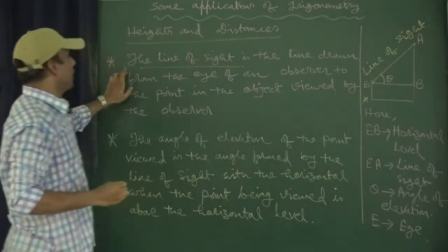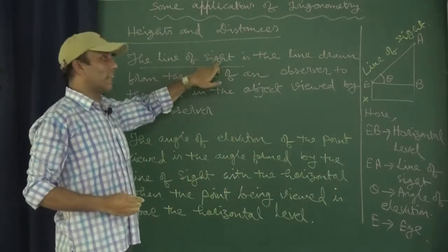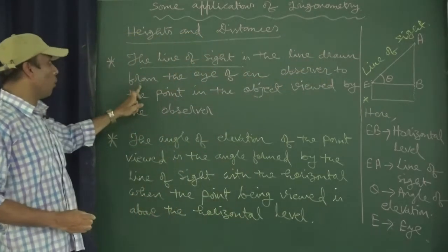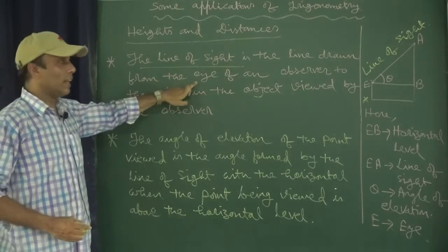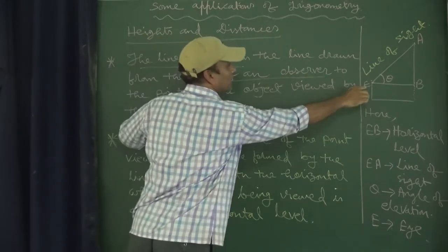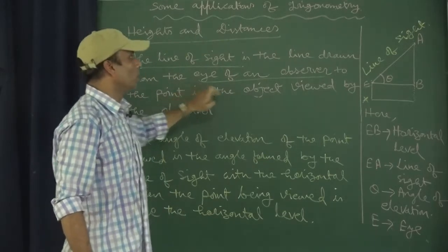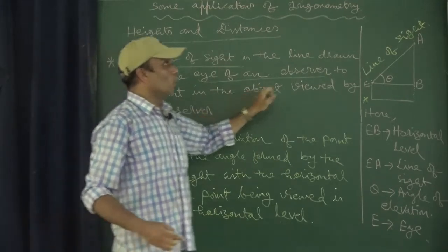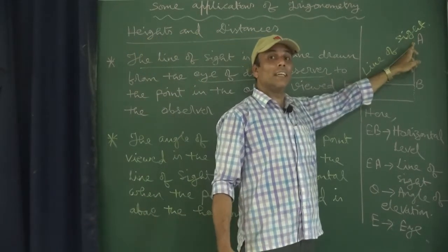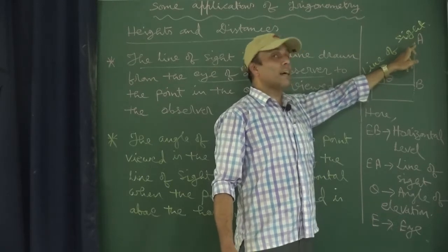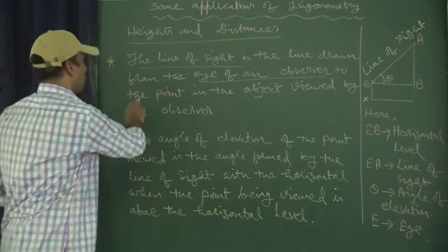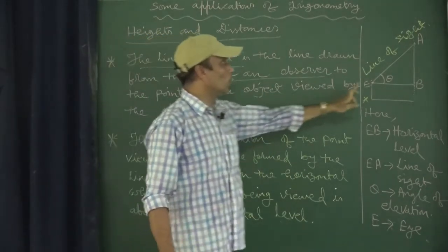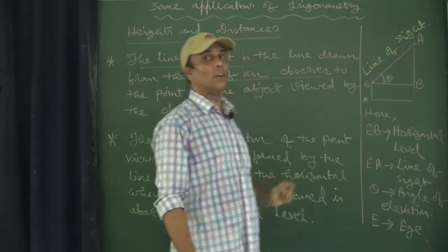So the line of sight is the line drawn from the eye of the observer — here E — to the point in the object viewed by the observer, which is A in this diagram. So EA becomes the line of sight.